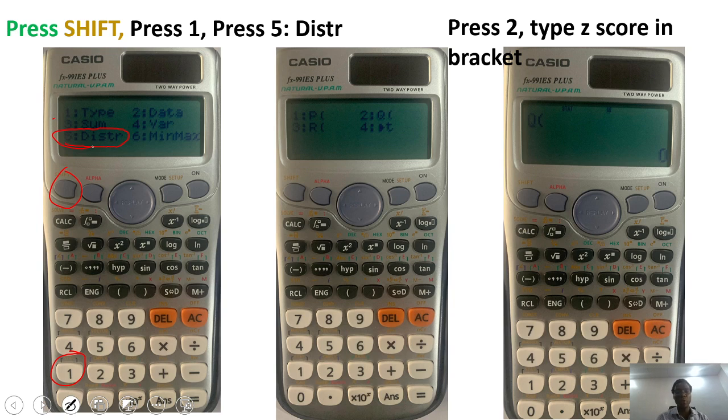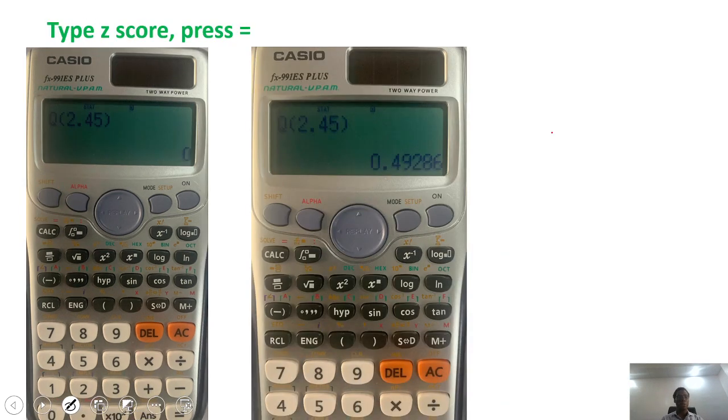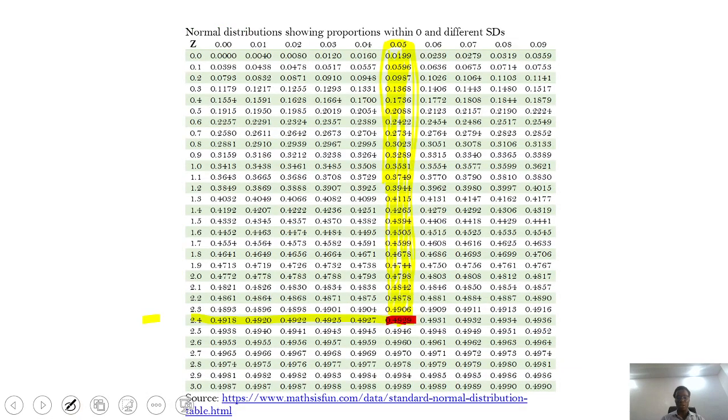If you do that, you will see 1, 2, 3, 4. Press 2, which is Q, and then you can now type in your z-score after Q. So if you type in 2.45 and close the bracket and press equal sign, it gives you 0.49286, which is exactly the same thing as what we have here, 0.4929.